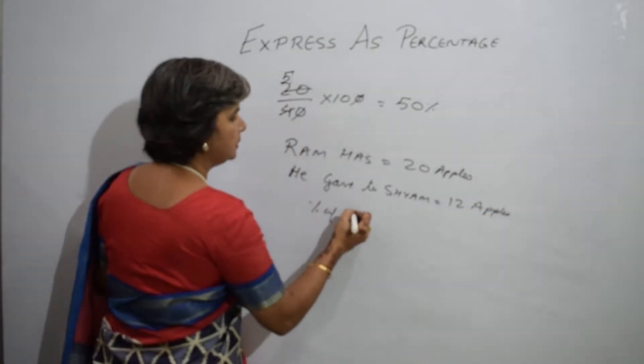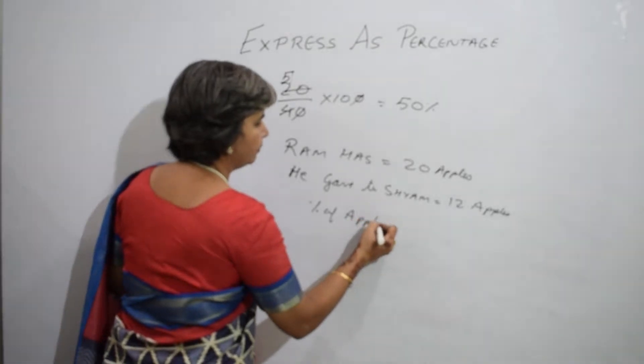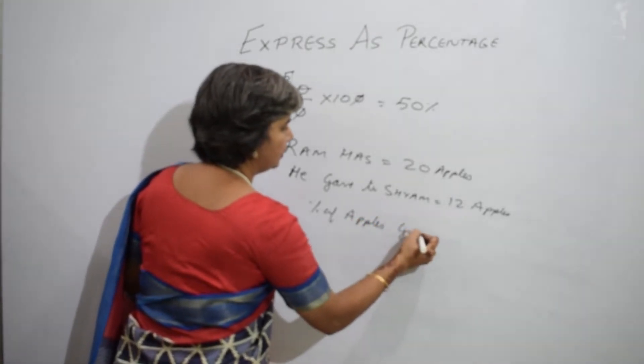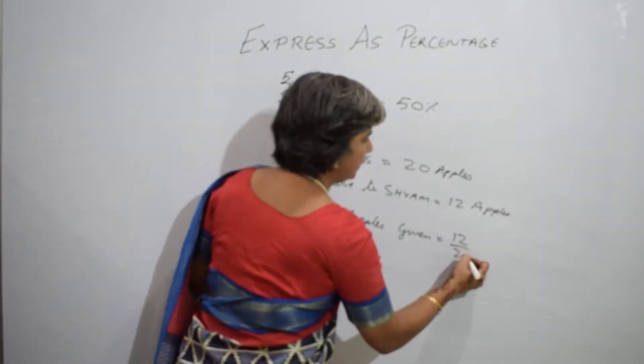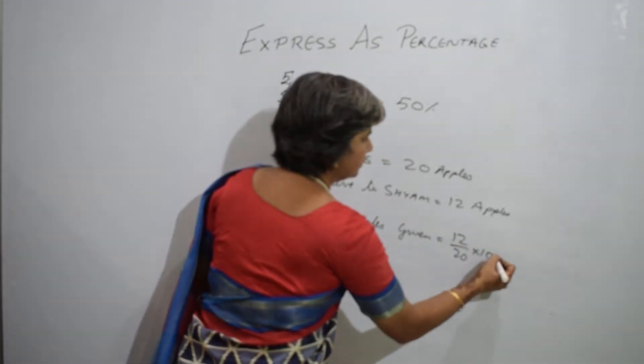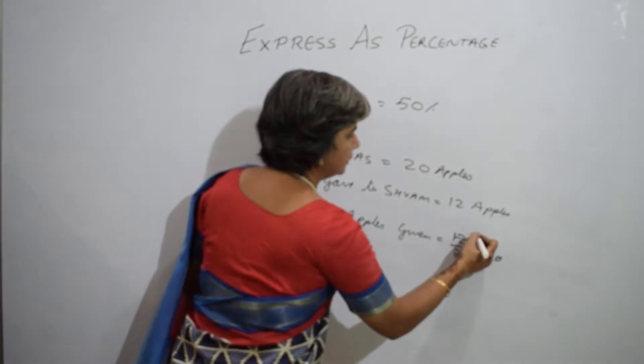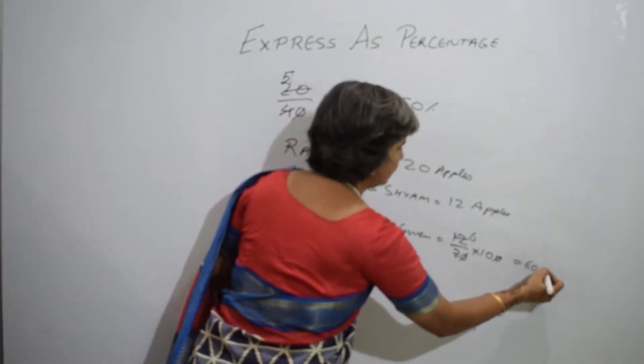Percentage of apples given is equal to 12 upon 20 into 100. That is 60 percent.